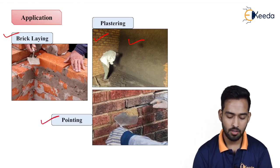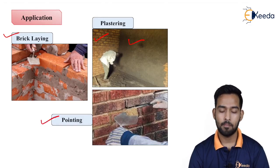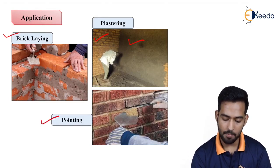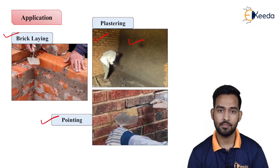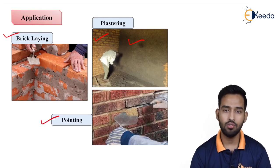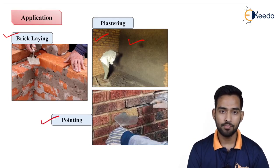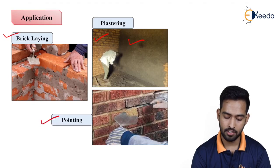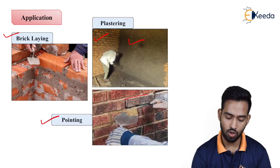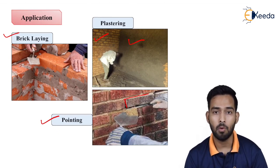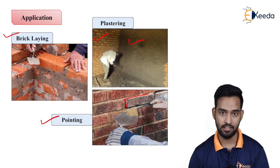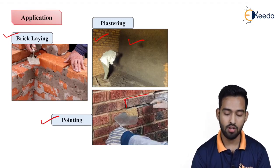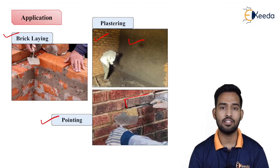The next application is pointing. What is pointing? The gap between two bricks is addressed through pointing. When a structure gets old and we go for repair work, the loose mortar between two bricks is chiseled off by using grooving tools, and then it is filled by using newly made mortar. This method is known as pointing. So mortar is also used for pointing purposes. These are the three applications of mortar, which are very useful in the construction industry.